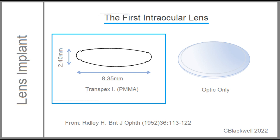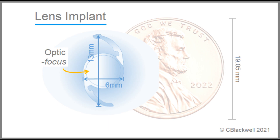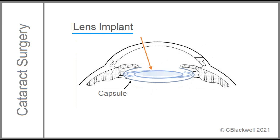Since then, lens design has come a long way. Ridley's original design was a simple round disc — the optic to do the focusing — but there was nothing to hold it in place. One of the first improvements involved adding arms, or haptics, to keep the lens in position. A typical modern lens is 13mm long with the optic 6mm in diameter. We need to recognize that the route from initial inspiration to current surgical technique and lens design was not a direct or easy one.